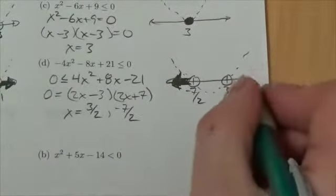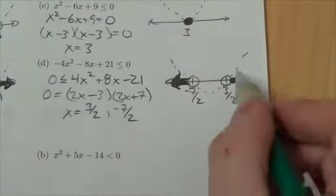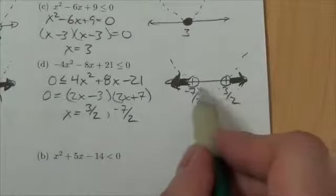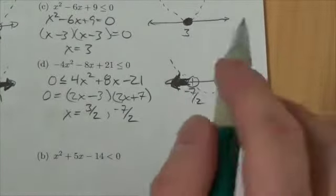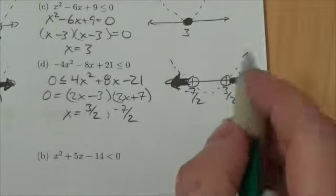If I choose values to the right of 3 halves, the y coordinates pop up above the x-axis. It's only when you're, the only time that this would be negative, if it's a parabola that opens up, the only time that it would be negative is when it's in between those two roots.